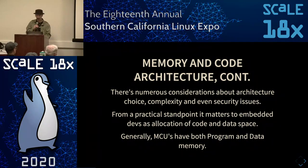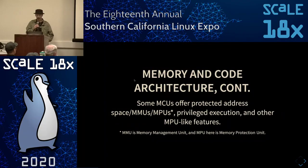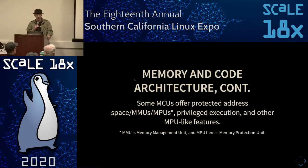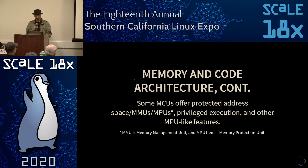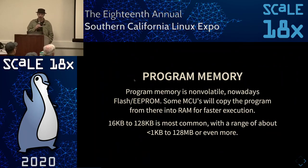Microcontrollers often don't offer protected address spaces, memory management units, or privileged execution like you'd find in a regular microprocessor running a regular OS. So if you have code running in different places, you have to be careful not to write over your own memory or code, because there's no one to stop you. Program memory is generally non-volatile — usually flash or EEPROM. RAM is generally faster, so some microcontrollers will copy the program into RAM and run it from there.